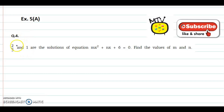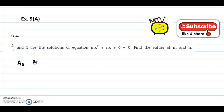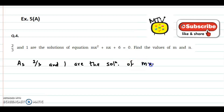We now discuss question number 4. Two-thirds and 1 are the solutions of the equation mx squared plus nx plus 6 equal to 0. Find the values of m and n.